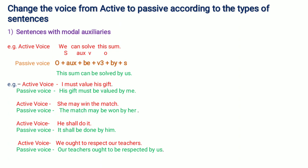Next example: 'She may win the match.' 'She' is the subject, 'may' is the modal auxiliary verb, 'win' is the verb, and 'the match' is the object. The passive voice is: 'The match may be won by her.'